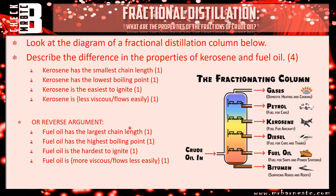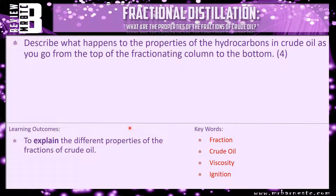And that's really all you need to remember. They can present different fuels, but as long as you know which one's at the top and which is at the bottom, the properties at the bottom will be the opposite of those at the top. The review question is: describe what happens to the properties of the hydrocarbons in crude oil as you go from the top to the bottom of the fractionating column — covering viscosity, chain length, boiling point, and ease of ignition. That brings this video to an end.